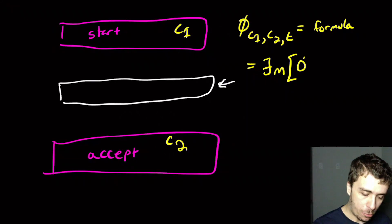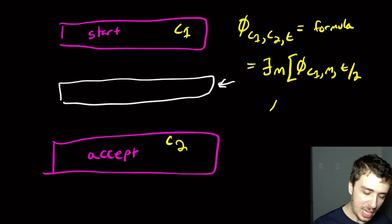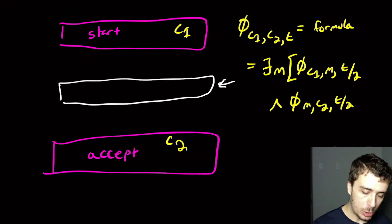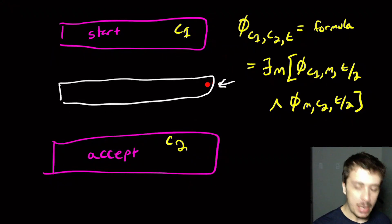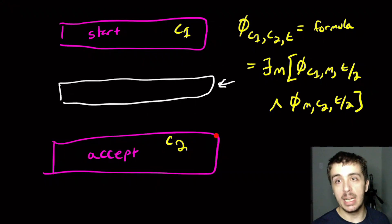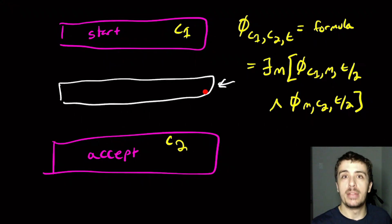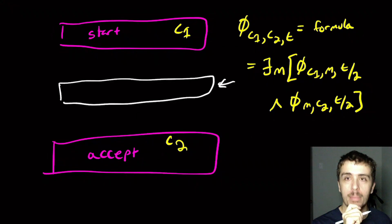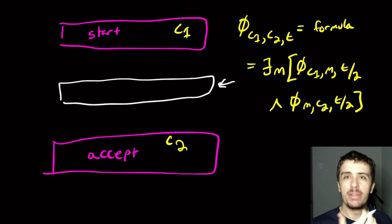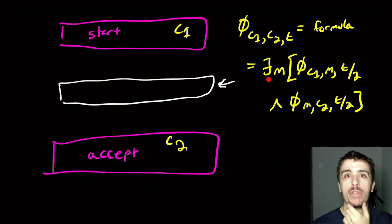We write: φ(c1, c2, t) = ∃ mid such that φ(c1, mid, t/2) ∧ φ(mid, c2, t/2). As long as we can get from c1 to mid in t/2 steps and from mid to c2 in t/2 steps, there exists some midpoint that works and we're good. Now try to think about why this approach won't actually work — pause the video. The reason is that the formula gets too big.